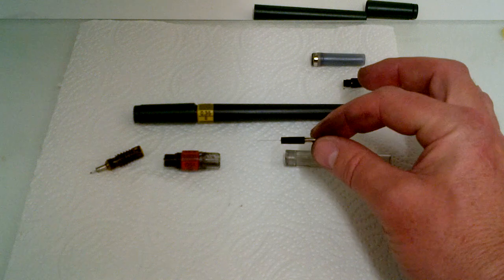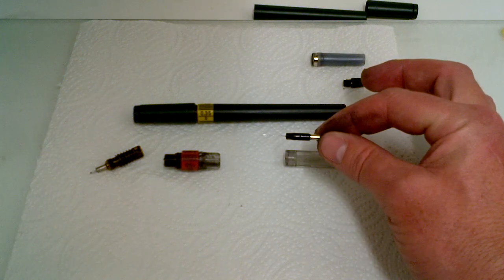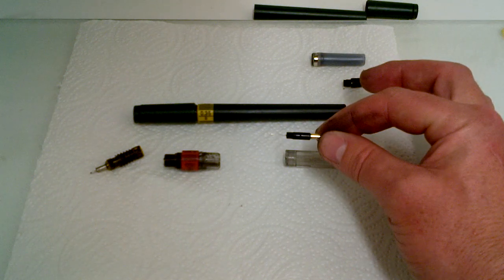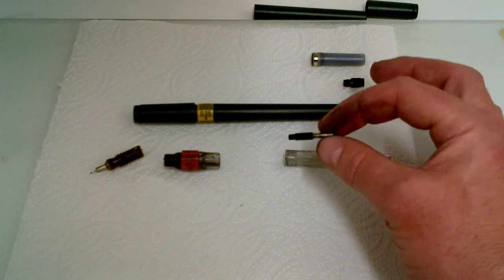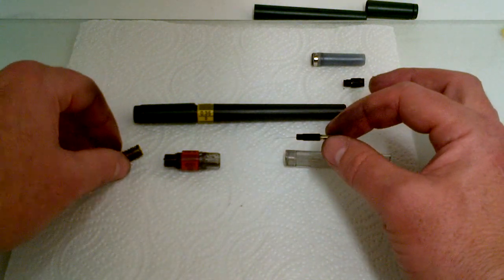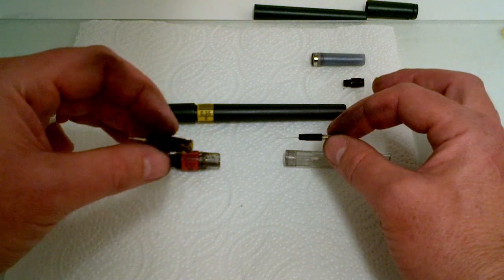Now, you'll notice at the end there's a very fine metallic hair, and that fits inside the nib. This part needs to be cleaned really well, and this needs to be cleaned out as well, the nib side of things.